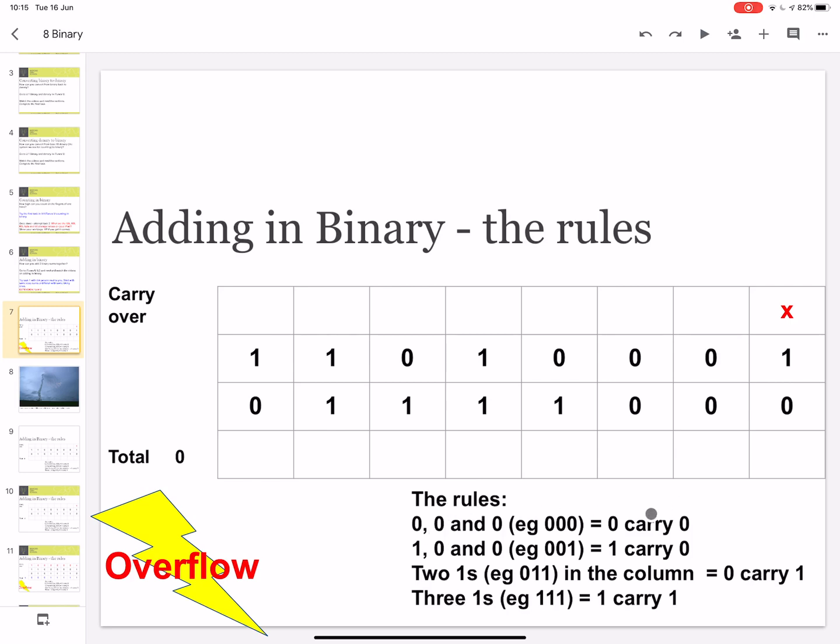These are the rules that we need to use to add these numbers together, and I'll explain how these work as we work out the answer to the first one. Now, if you're asked to do this in an exam, I would highly suggest you copy out a table a bit like this. So we have a carryover row. When I talk about carryover, I mean when you do column addition normally, sometimes you carry numbers over to the next column. That's what this is for. And I've got a total row here, so we can work out the total of our two binary numbers added together.